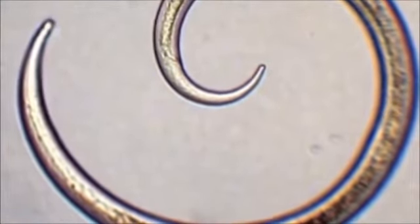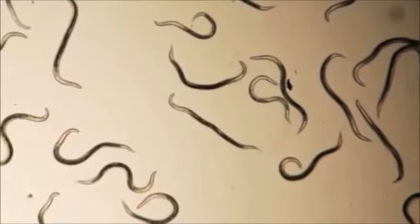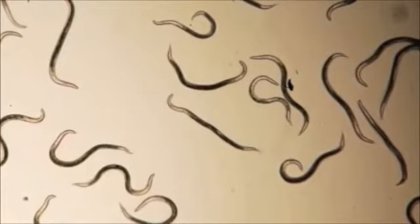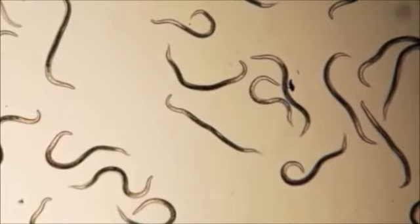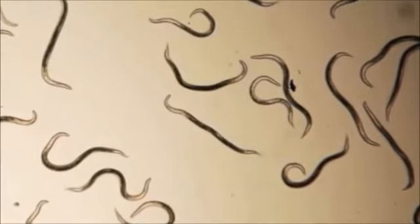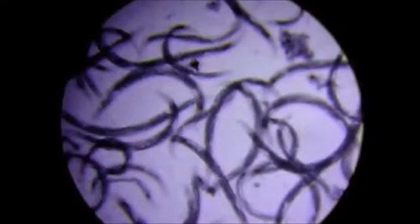Nematodes are one of the most abundant animal groups on Earth, with over 25,000 known species. Biologists estimate that the total number of nematode species may actually number over 1 million. They have evolved to fit into nearly every ecosystem possible.